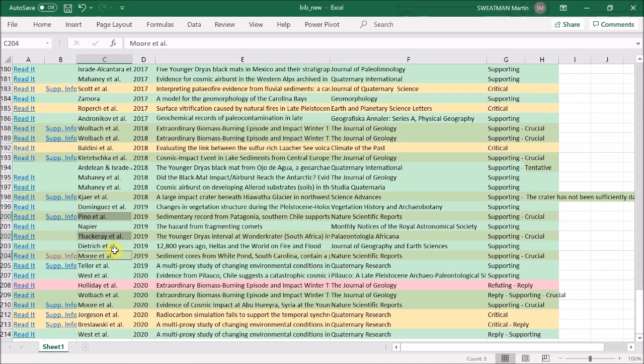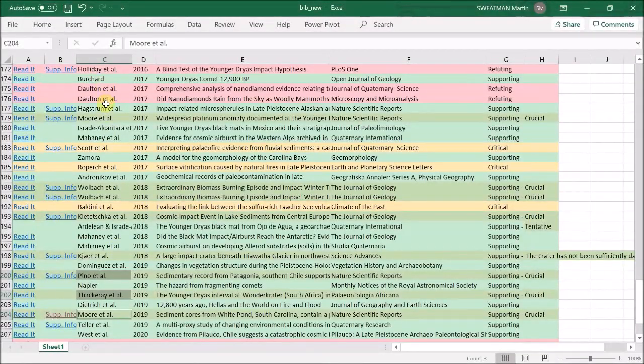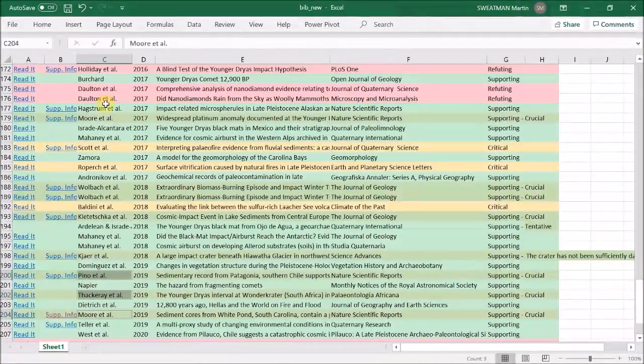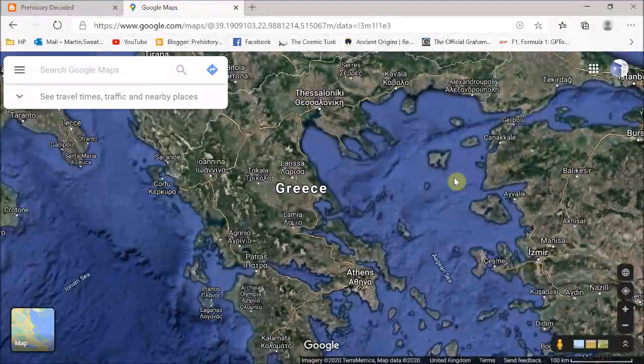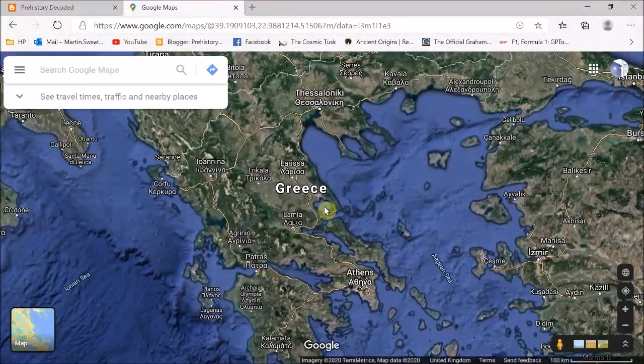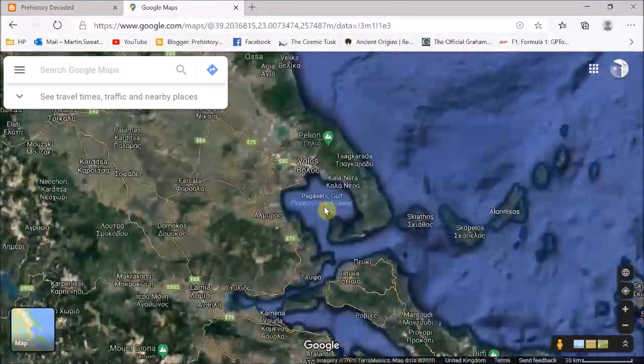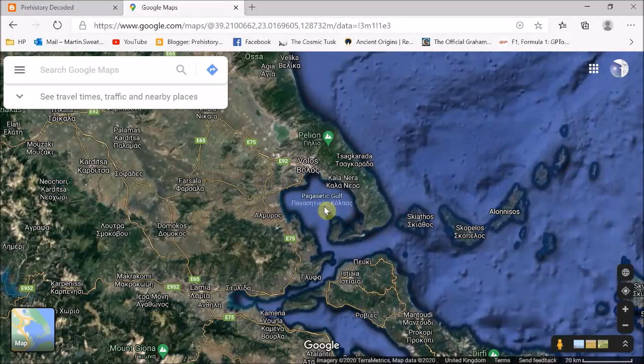Now the paper by Dietrich et al, like the paper by Burchard from 2017 which pointed the finger at the Saginaw Bay area, investigates the possibility that certain geological features might have resulted from unusual kinds of cosmic impacts. In this particular case they look at a roughly circular feature in Greece known as the Pagesitic Gulf. But like Burchard's work, this is mostly geological and outside my comfort zone, so I'll not review that paper either.